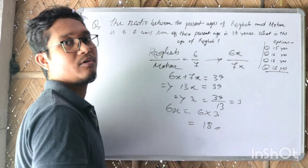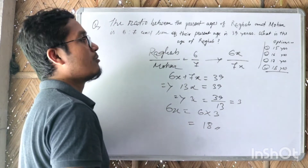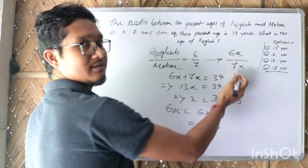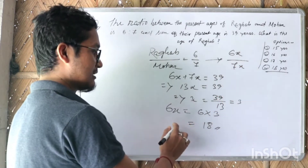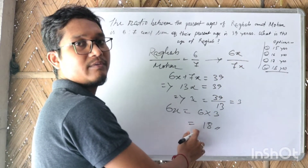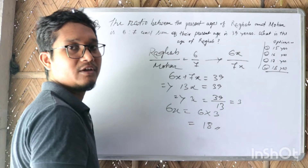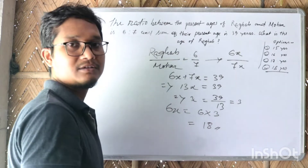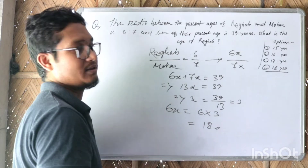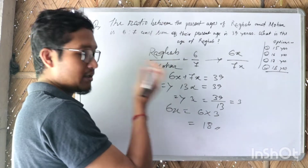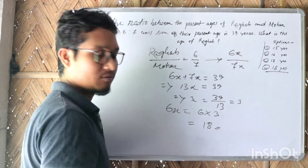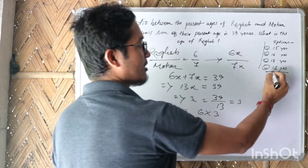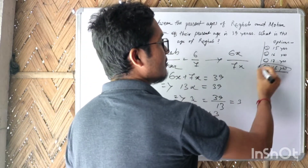Mohan's age is 7x. So 7x into 3 equals 21. Mohan's age is 21 years. So Raghav's age is 18 years — option number four.